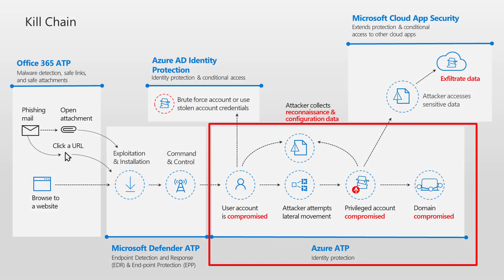When you think about the cybersecurity kill chain, Azure ATP sits inside that red box, and this is where once an attacker is in the environment and they try to compromise an identity, do lateral movement, or try to compromise a domain, Azure ATP can give you visibility into that and really help you stop that attack.